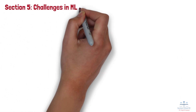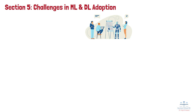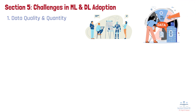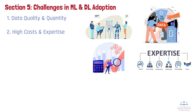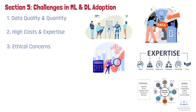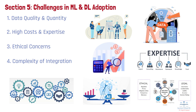Section 5: Challenges in ML and DL adoption. While ML and DL offer immense potential, implementing them in business is not without challenges. Number 1: Data quality and quantity — ML and DL models require large amounts of high-quality data to perform effectively; poor or insufficient data can lead to inaccurate predictions and subpar results. Number 2: High costs and expertise — developing and deploying ML and DL models can be expensive and requires specialized expertise; businesses must invest in skilled personnel and infrastructure. Number 3: Ethical concerns — bias in algorithms, data privacy, and job displacement are significant ethical issues; companies must ensure their AI systems are fair, transparent, and compliant with regulations. Number 4: Complexity of integration — integrating ML and DL into existing business processes can be complex, requiring significant changes to workflows and systems.